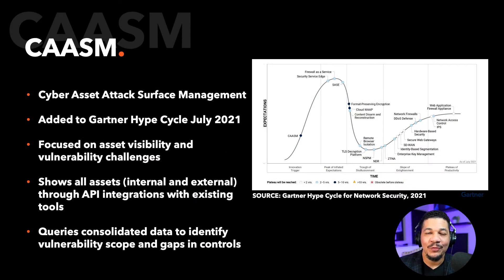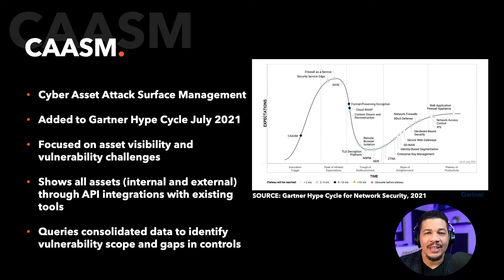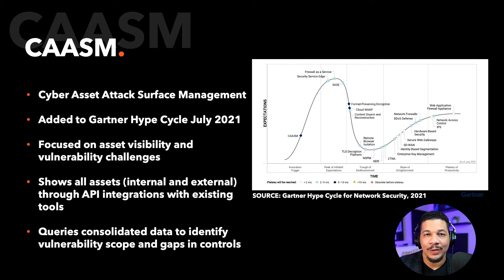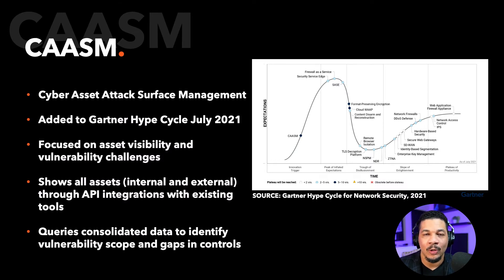Hello, everyone. In this video, we're going to talk a little bit about the acronym CAASM. CAASM stands for Cyber Asset Attack Surface Management. This is all about observability and visibility of your assets — both on-prem and in the cloud. This term was coined by Gartner in July 2021 as part of their hype cycle.